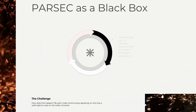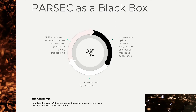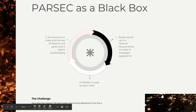Imagine you've set up a bunch of nodes in a network. Each node is listening for events that are taking place across the network, but there's no way of guaranteeing in which order those messages will appear. So each node uses Parsec to get all of these events into an order that the rest of the network will eventually agree with. As they follow this process, information is shared so that everybody else gradually builds up the same knowledge. But how does it happen? Well, by each node continuously agreeing on who has a valid right to vote on the order of events.